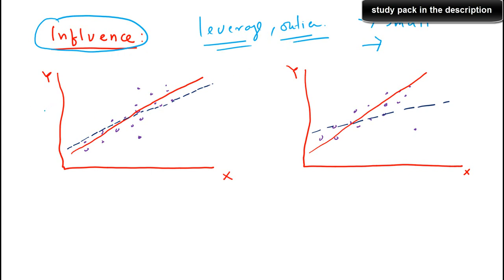Here is an example where we have built two regression models — one with the outliers and one without the outliers. There are two outlier data points here not following the general trend. The dotted blue line is the one with the outliers, and the red line is the one without the outliers. You can see that the regression lines are quite different with different slopes.